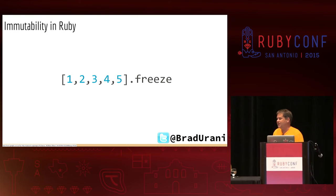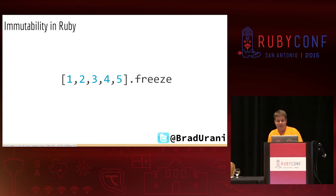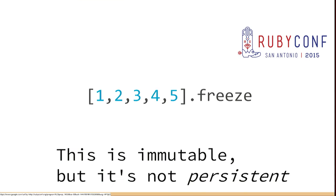That's not really that interesting, and it's not what this talk is about. That's because this data structure is immutable, but it is not persistent. These are two different things. Persistent is a data structure with some special qualities, and that's what I'm going to be explaining today.